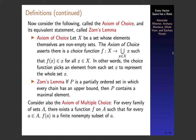We also have the Axiom of Multiple Choice, which states that for every family of sets A, there exists a function f on A such that for every little a in big A, f of a is a finite non-empty subset of a. You can see how this is similar to the Axiom of Choice — it actually implies the Axiom of Choice, but it's not quite as strong.